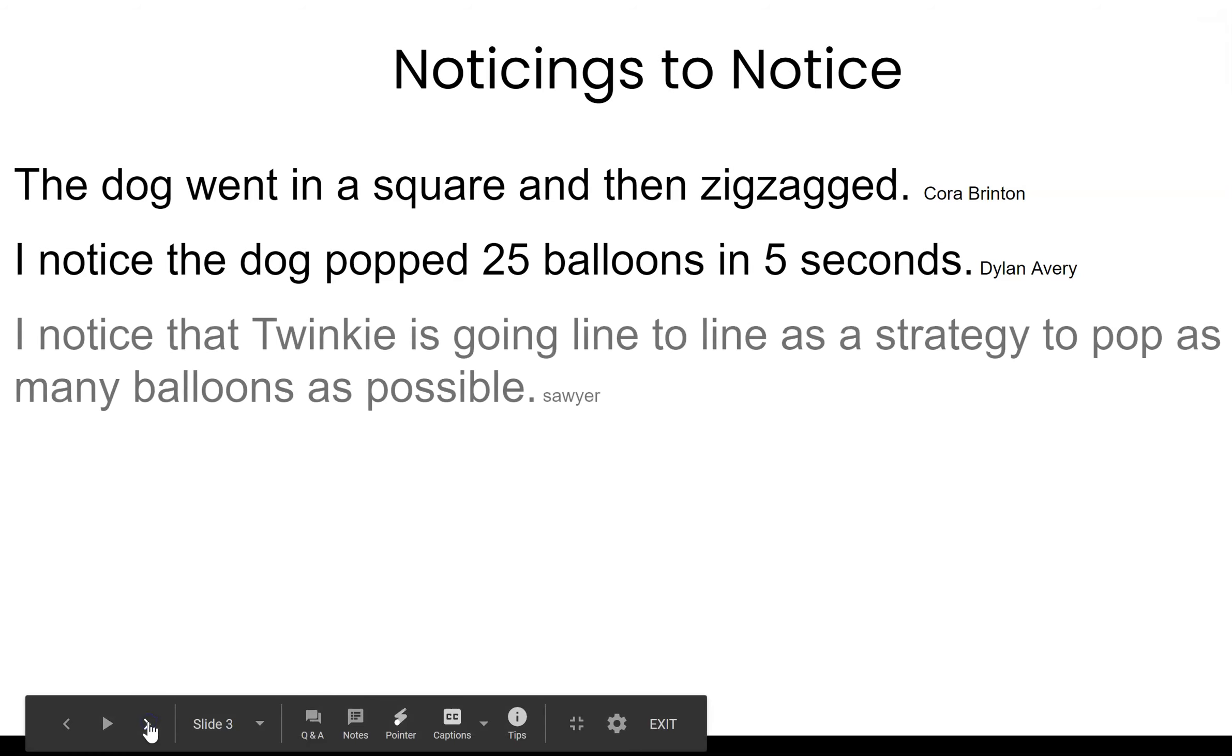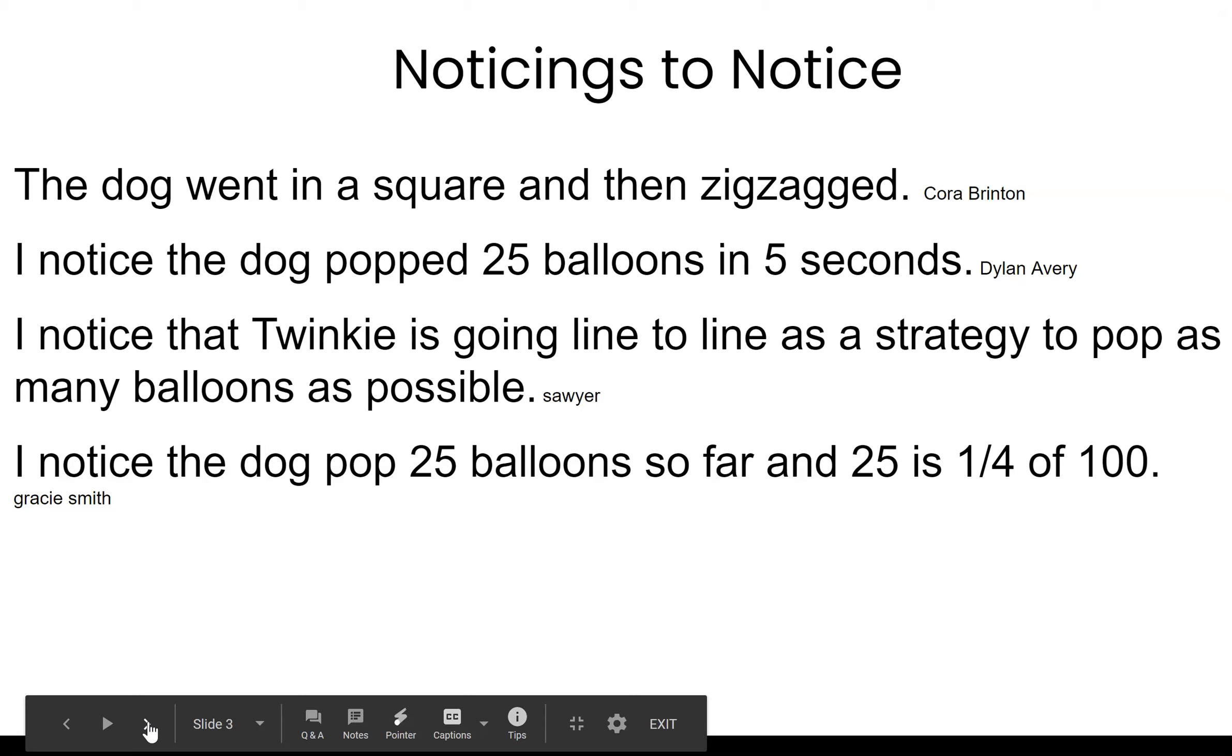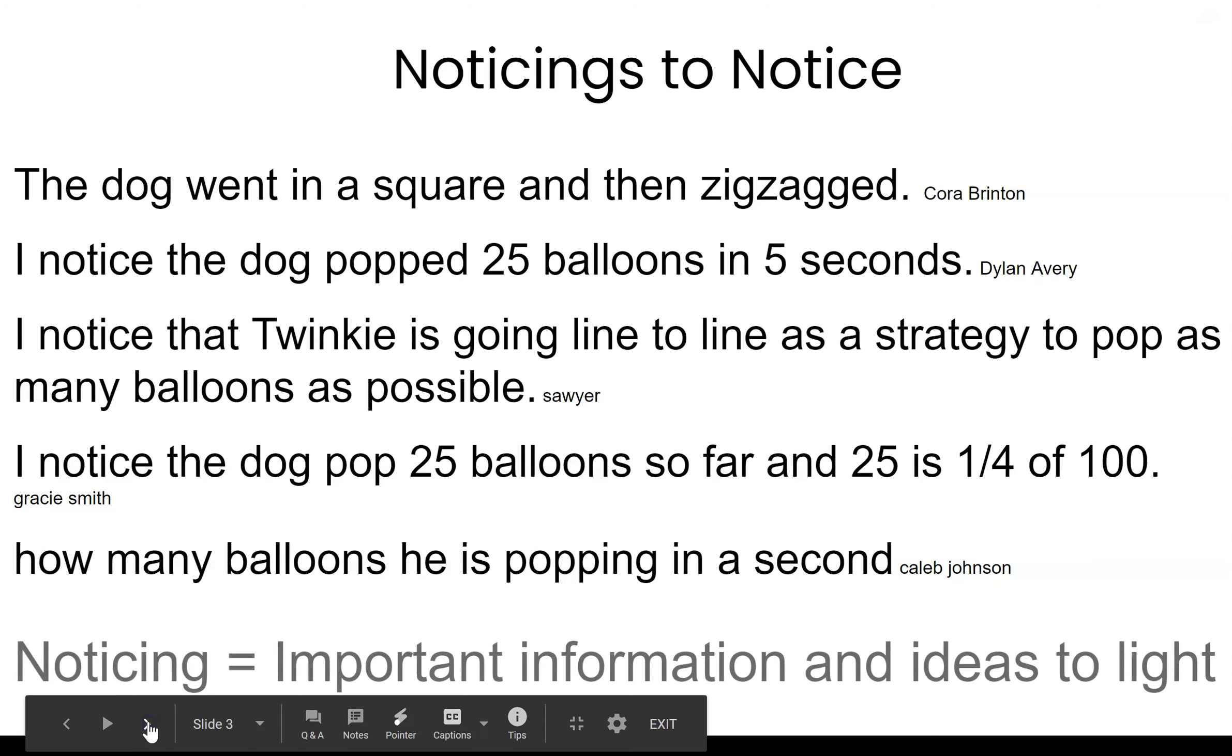I noticed that Twinkie is going line to line as a strategy to pop as many balloons as possible. That's what Sawyer thought. I connect that notice with what Cora said. I noticed the dog popped 25 balloons so far, and 25 is a quarter of 100. Interesting notice. Gracie also made a conjecture there, an idea about the things she noticed. How many balloons he is popping in a second. That's something that Caleb thought he noticed, but that's something that changed and it was hard to calculate. When we notice things, we find the important information and bring ideas to light.